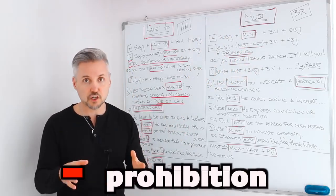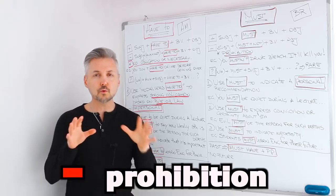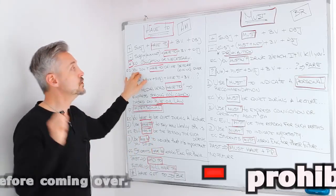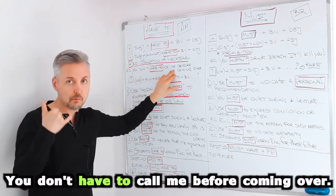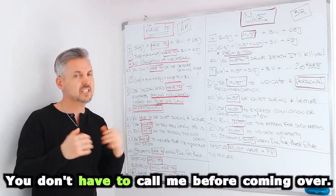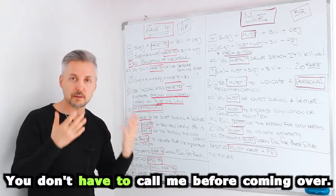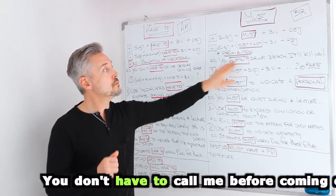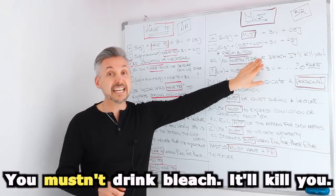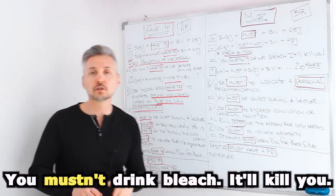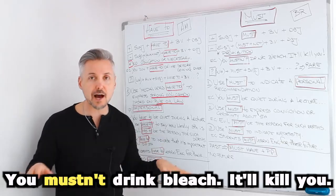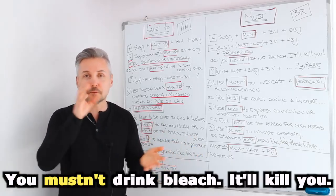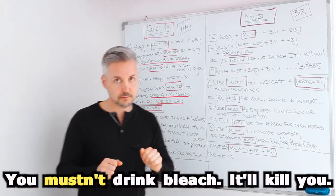In this case, if you use 'must' in a negative sentence, it means prohibition. I will give you two examples. The first one with 'have to': 'You don't have to call me before coming over' — it's not necessary. With 'must' instead: 'You mustn't drink bleach' — it'll kill you. So you cannot, you're not allowed — it will kill you if you drink bleach, so you mustn't.